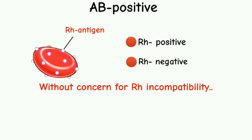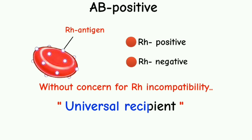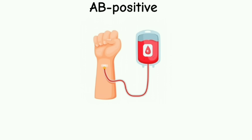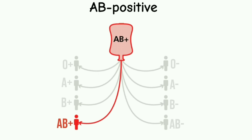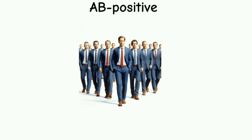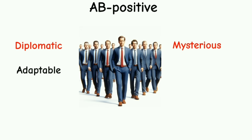That is why it is known as universal recipient, because AB positive patients can receive red blood cells from all blood types. However, they can only give blood to patients with type AB positive. People with this blood type are often described as psychologically diplomatic, adaptable, mysterious, and charismatic.